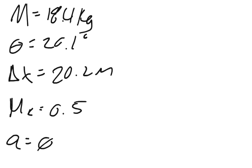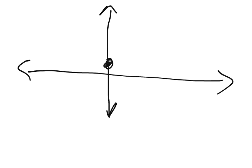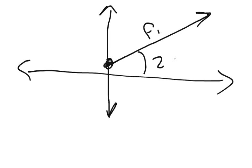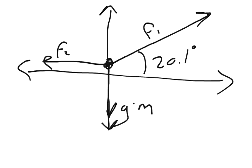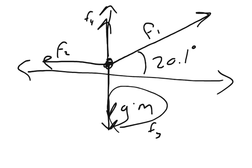Now we want to draw a free body diagram. This is our sledge, this is my x-axis, and this is my y-axis. We've got a couple of things pulling on it. We have this force F1 pulling at 20.1 degrees, and then we've got gravity, which we'll call G times M, and then we have F2. We'll call the force of gravity F3 and the normal force F4. F2 is our friction force. Then we're going to break these down into x and y components.